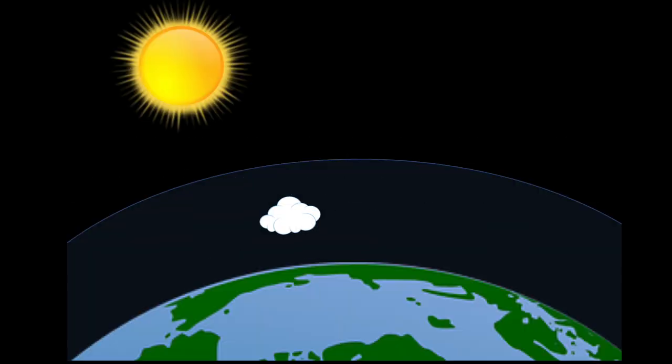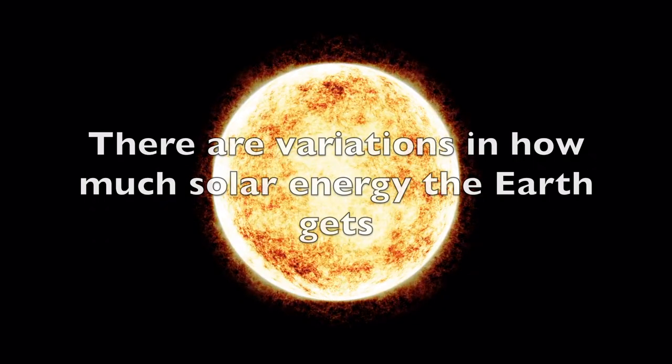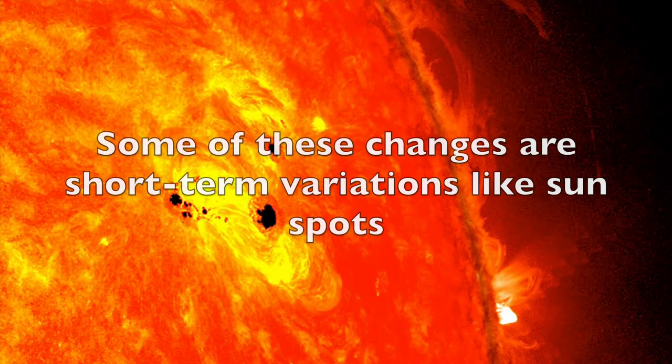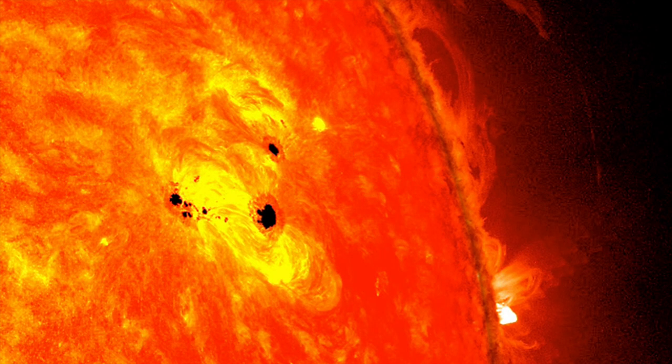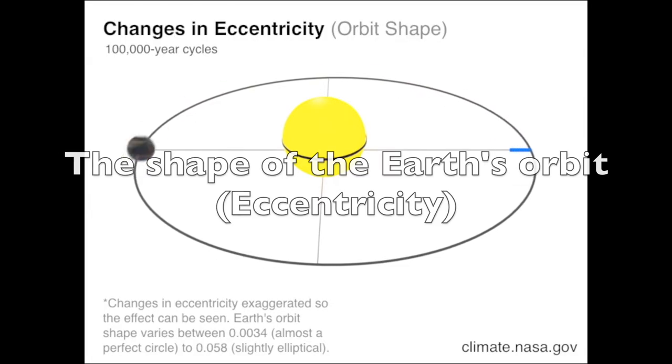In summary, the energy that enters the Earth system comes from the Sun. There are variations in how much solar energy the Earth gets. Some of these changes are short-term variations like sunspots, but there are also longer-term variations like the shape of the Earth's orbit.